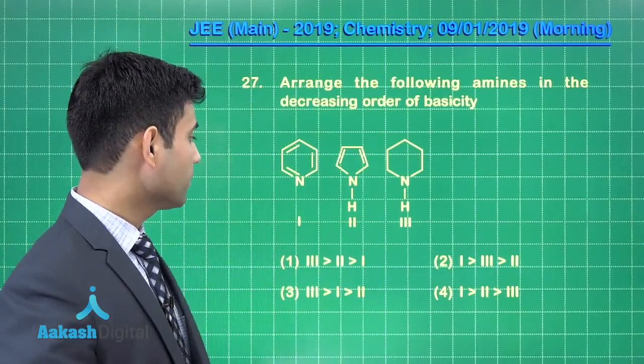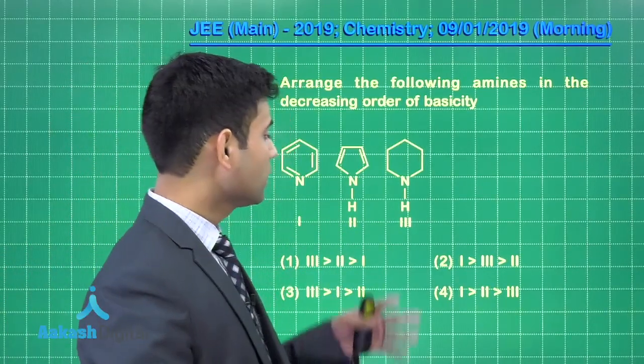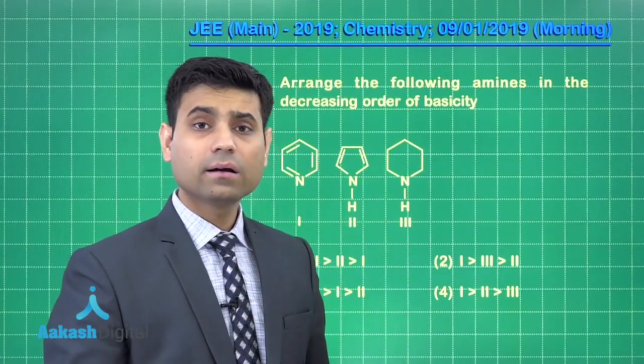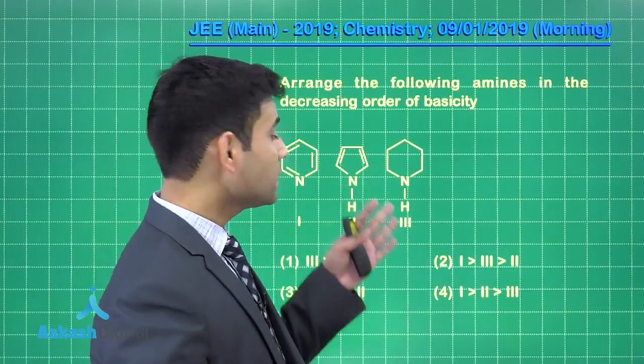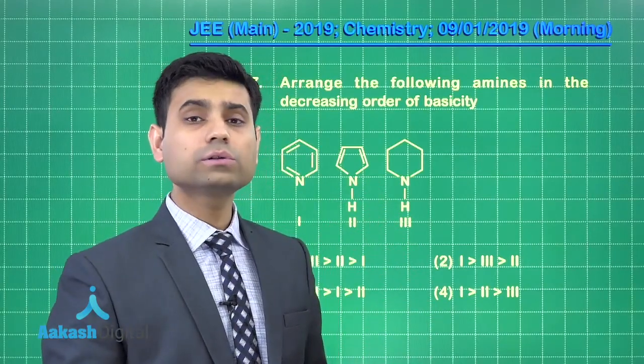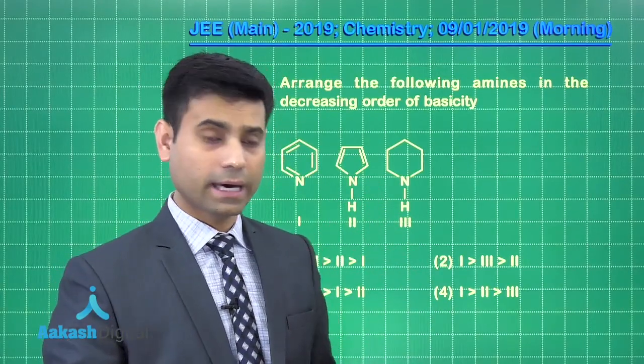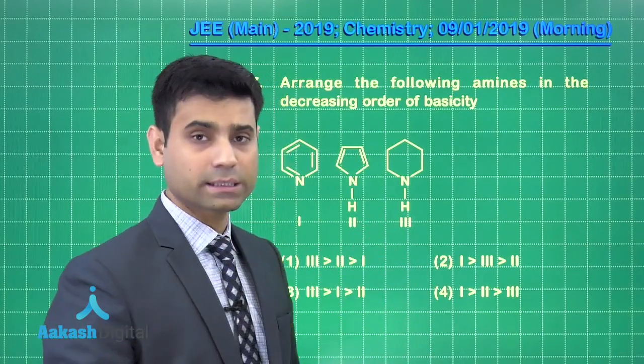Students here we can see if I talk about piperidine here we do not have any resonance. So, lone pair is completely available. Also we have plus i groups. Hence its basic strength will be maximum.